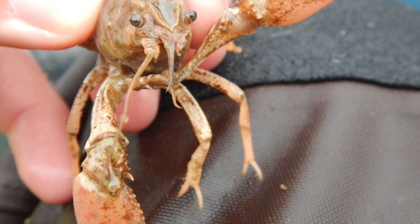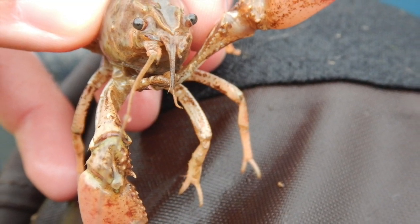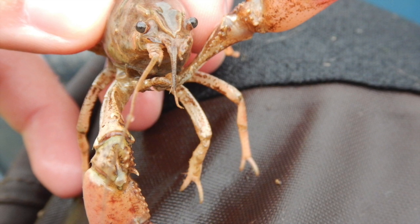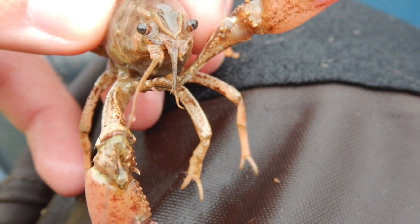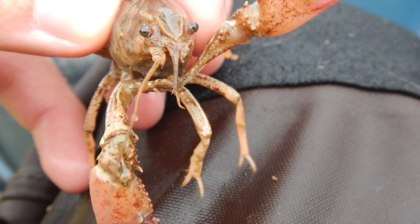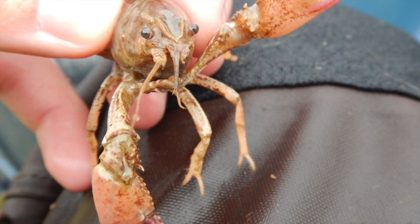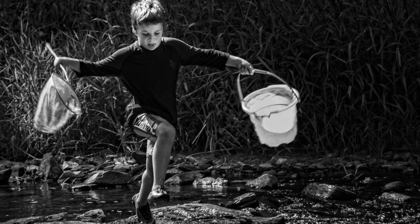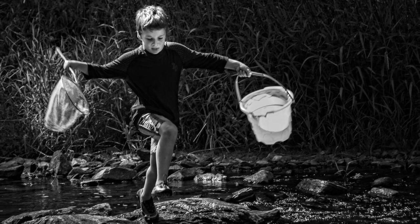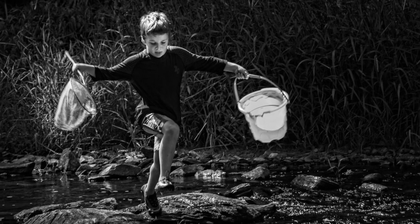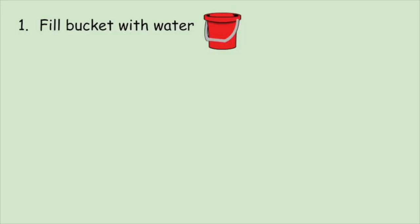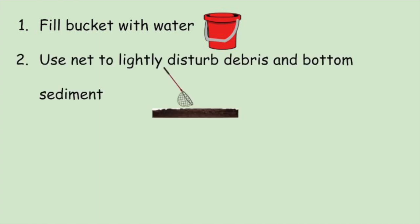So how do you catch macros? Well, it's actually not too difficult, but definitely requires adult supervision since you'll likely be near potentially deep or fast-moving water. All you'll need is a net, bucket, and some tall waterproof boots or shoes, unless you don't mind getting your feet wet. The first thing you're going to do is fill up your bucket with a little bit of water from your water source. Next, you're going to use the net to lightly disturb the debris and the bottom sediment.